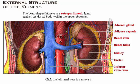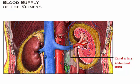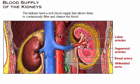When the renal vein is removed and the kidney is shown in frontal section, you can see the deeper renal artery and its connection to the abdominal aorta. Branching from the renal artery are the segmental and lobar arteries. Together, these vessels provide the kidneys with a rich blood supply under high pressure that allows them to continuously filter and cleanse the blood.